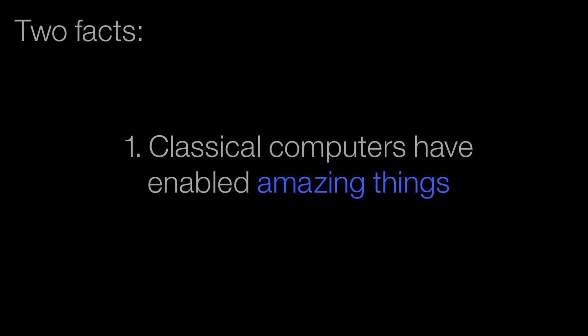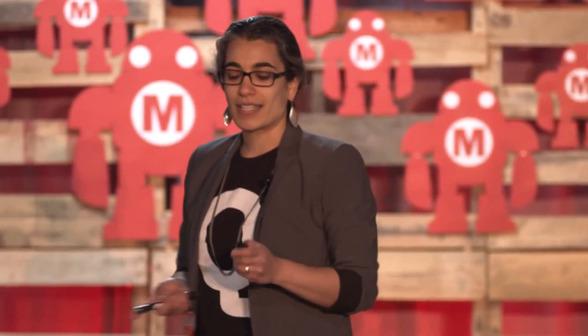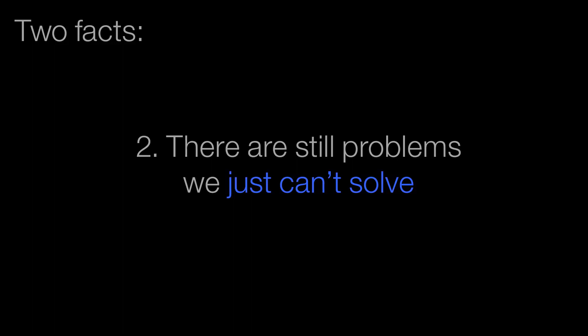I want to start with two facts. Fact number one: classical computers have enabled amazing things — the internet, flying across the country on a plane, the electronic giraffe outside blaring music. Classical computers have enabled just amazing things, but one of the things we don't often talk about is all the things they can't do. I want to start with two examples of things classical computers are really bad at. Maybe they can solve small versions of these problems, but by the time the problem gets big enough to be interesting we just run out of computing horsepower.